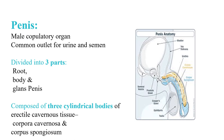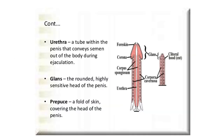The penis is the male copulatory organ and a common outlet for urine and semen. It is divided into three parts: root, body, and glans penis, and is composed of three cylindrical bodies of erectile cavernous tissue — corpora cavernosa and corpus spongiosum. The penile urethra conveys semen out of the body during ejaculation. The glans is the rounded, highly sensitive head of the penis. The prepuce is a fold of skin covering the head of the penis.